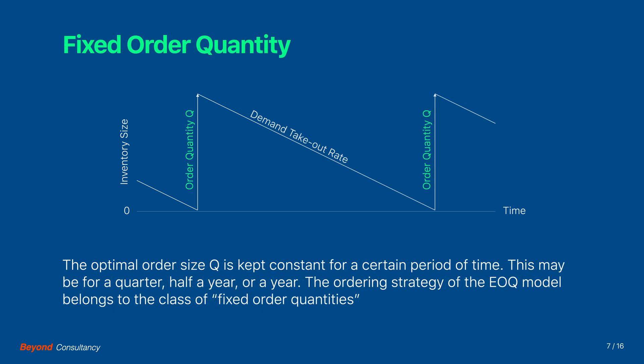Next, the optimal order size Q is kept constant for a certain period of time. This period may be a quarter, half year or a year, depending on specific supply chain considerations. The ordering strategy of the economic order quantity model belongs to the class of fixed order quantities. In a parallel keynote, we will discuss other classes of ordering strategies.